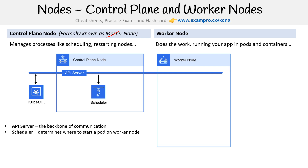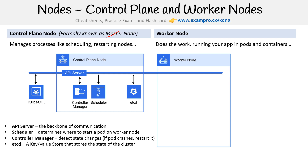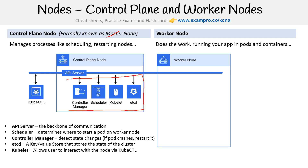Then we have the scheduler, which determines where to start a pod on worker nodes. We have the controller manager, which detects state changes — so if a pod crashes, it tells it to restart. You have etcd, which is a key-value store that saves the cluster state; the controller manager highly relies on etcd. And you have kubelet, which allows users to interact with the node via kubectl. Kubelet is on both worker nodes and control plane nodes, and generally all of these are in the kube-system namespace.